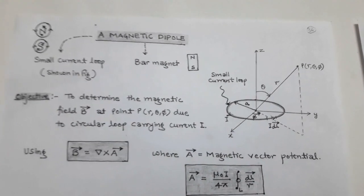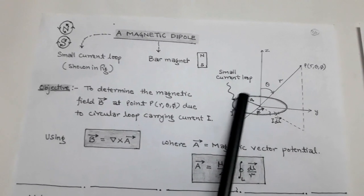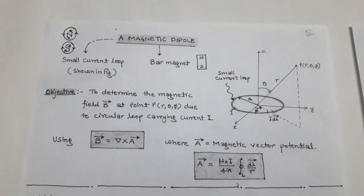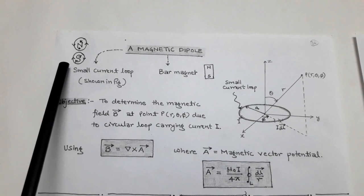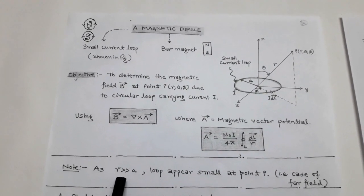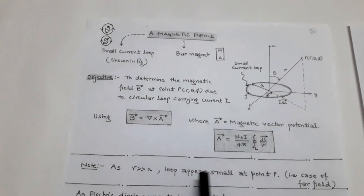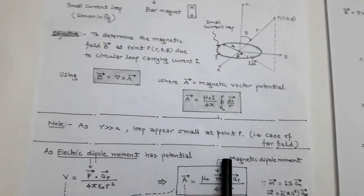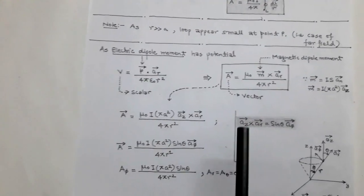We consider a small current loop in which the current flows in the anticlockwise direction, and we determine the magnetic flux density B at point P. The small current loop behaves as a magnetic dipole with north and south poles. We consider point P to be very far from the magnetic dipole such that the dipole appears very small — this is the far-field case.